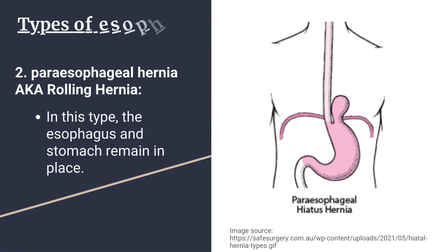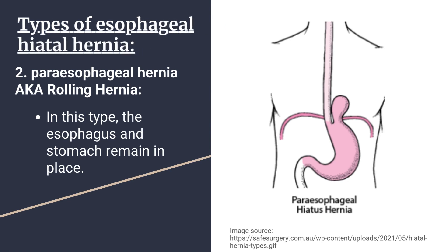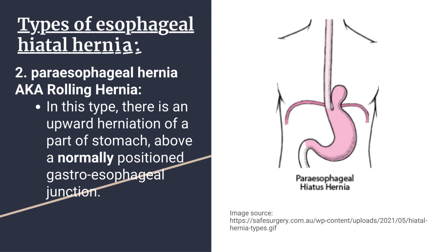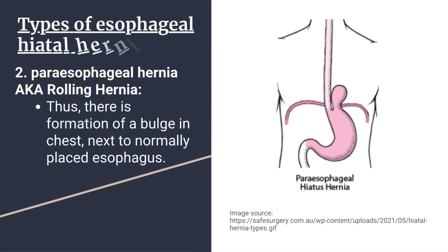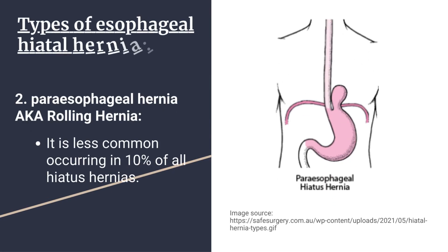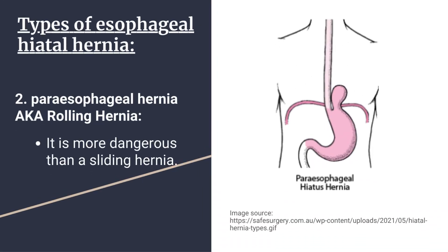Number 2: Paraesophageal hernia, also known as rolling hernia. In this type, the esophagus and stomach remain in place. There is an upward herniation of a part of the stomach above a normally positioned gastroesophageal junction. Thus, there is formation of a bulge in the chest next to the normally placed esophagus. It is less common, occurring in 10% of all hiatus hernias, and it is more dangerous than a sliding hernia.